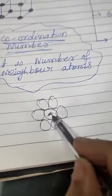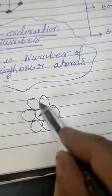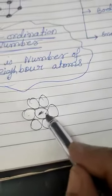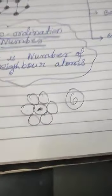Just check, this particle is surrounded by how many other particles? One, two, three, four, five and six. Then what will be the coordination number of this particle? That will be six. In this way you have to try to understand.